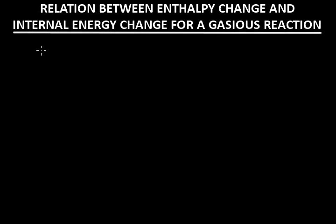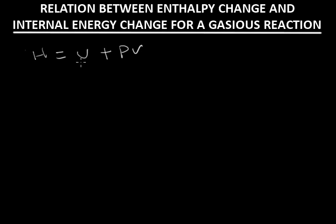From the definition of enthalpy we know that H equals U plus PV, where H is the enthalpy of the system, U is the internal energy of the system, P is the pressure of the system, and V is the volume of the system.